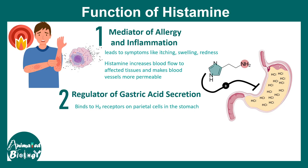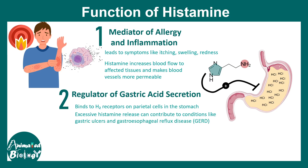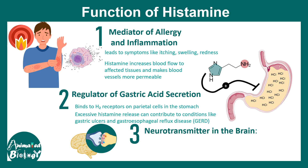Histamine can modulate acid secretion from the stomach. It binds to H2 receptors on the parietal cells of the stomach, leading to gastric acid secretion. Excessive histamine can cause problems like gastroesophageal reflux disease (GERD) or gastric ulcers.